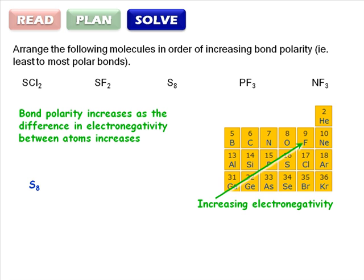To find the next least polar bonds, look for the two elements that are closest to each other on the periodic table. They will be closest in electronegativity values and therefore have the least polar bonds. Sulfur and chlorine are right beside each other, so SCl2 is next.